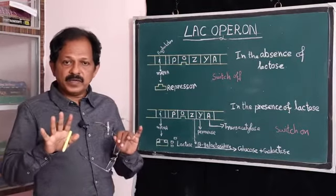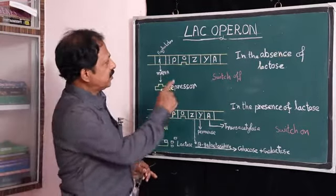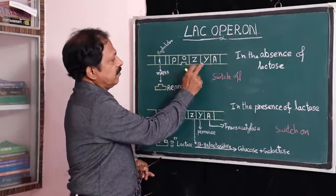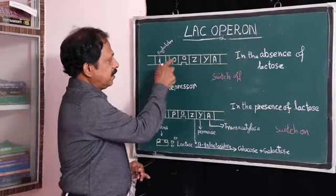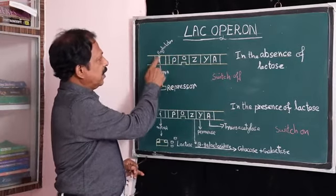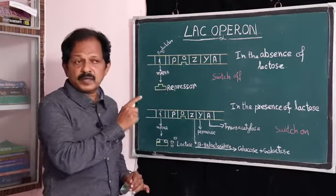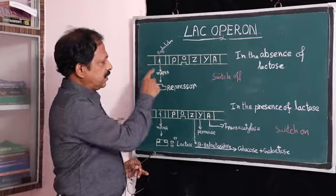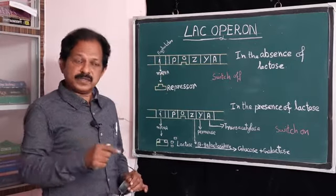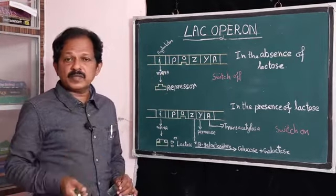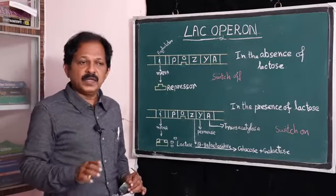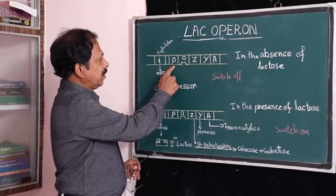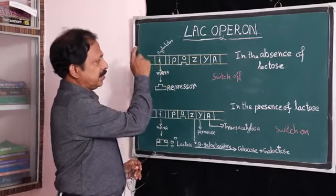In the Lac Operon, there are five components: structural genes Z, Y, and A; then the operator; the promoter; and the regulator. The regulator is represented by the I gene, because the repressor is inhibitory in function, so it is represented by I. Another component is the inducer. The promoter and regulator represent the I gene.